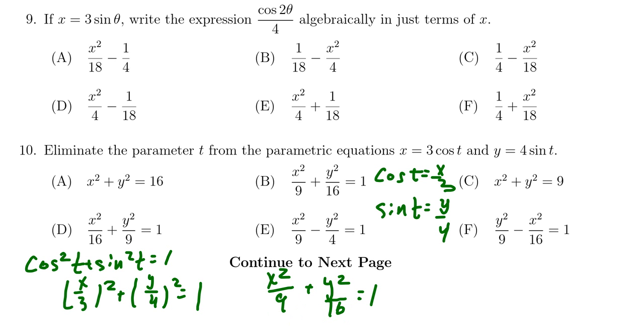without even understanding these equations, the conic sections, we can just use the Pythagorean equation to eliminate the parameter in this situation, for which case we then see that the correct answer would be choice B.